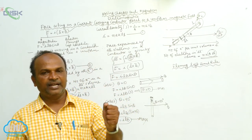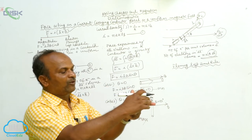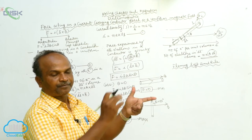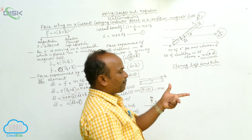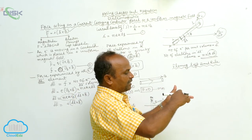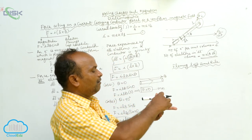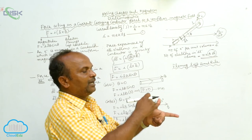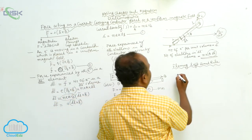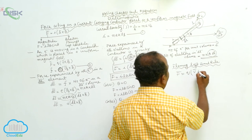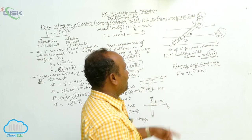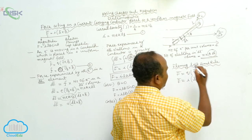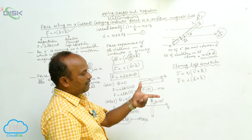What is Fleming's Left Hand Rule? Using the left hand, we consider three fingers: the thumb finger, the forefinger, and the middle finger. The current is in the direction of the middle finger, the forefinger is in the direction of the magnetic field, and perpendicular to both, the thumb points in the direction of the force. So F̄ = I(L̄ × B̄).